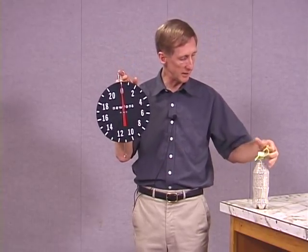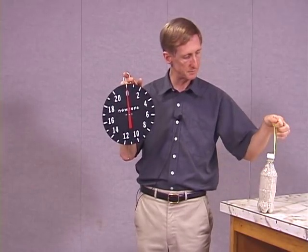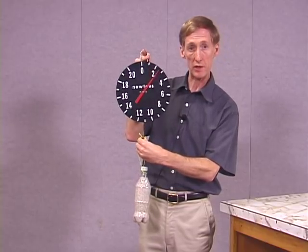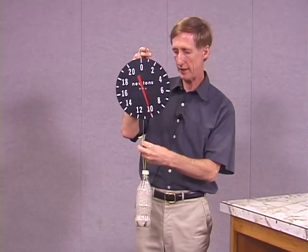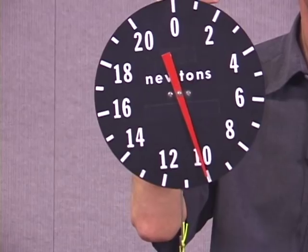Now the object that we're going to be weighing is this soda pop bottle that we filled with sand. It has a mass of about one kilogram, so its weight should be about 9.8 newtons. And as you can see from the scale reading, it's right around 10 newtons.